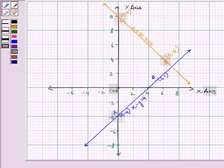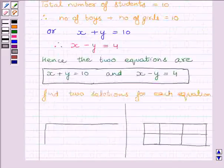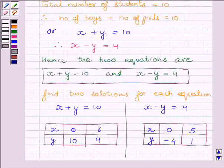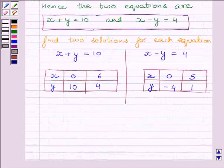Now we can see the two lines AB and CD intersect each other at point P, having its coordinates as (7, 3). We observe that the value of x is equal to 7 and the value of y is equal to 3, where x is the number of girls and y is the number of boys.